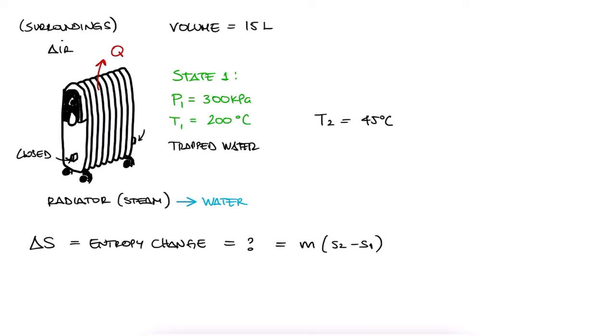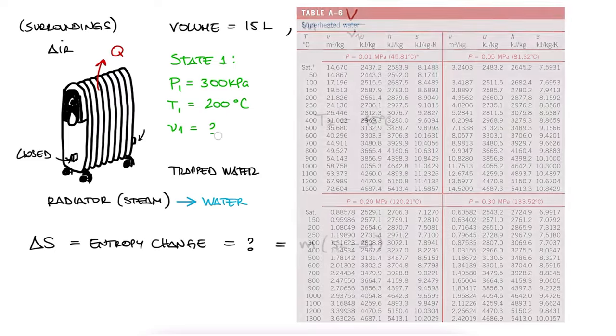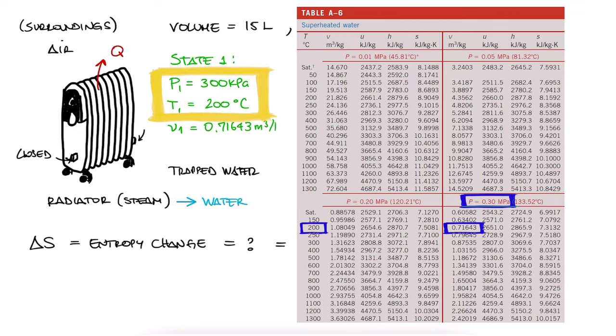State 1 is fully defined. Since we're going to need the mass for this and we have the volume of steam, we can just look up the specific volume at state 1 to calculate the mass. So we go to the saturated vapor tables to find V1, and while we're at it, we can write down the specific entropy for state 1 as well.